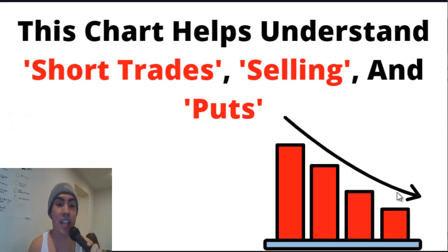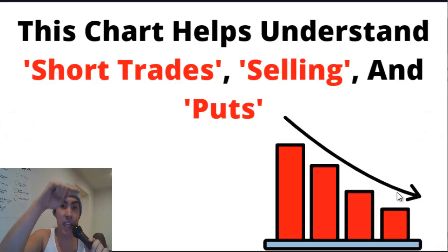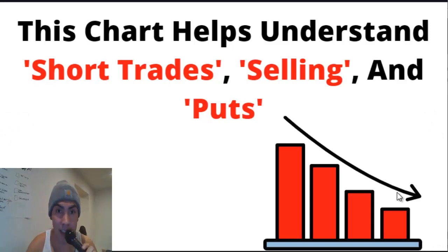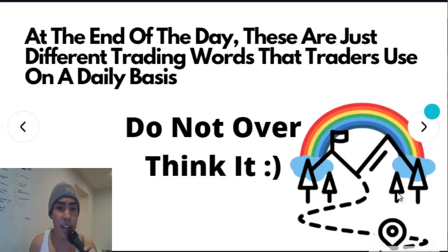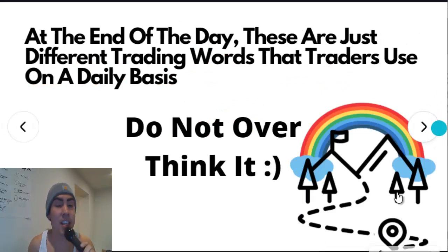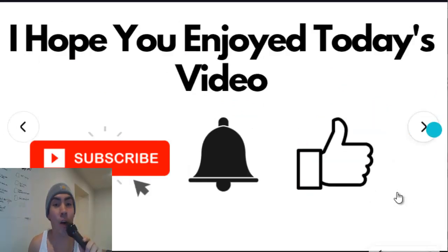This chart helps us understand short trades, selling, and puts. As you can see, the graph is going down and it's red, meaning the market is dropping. So that's what short trades are — selling and puts all mean and represent the same thing. At the end of the day, these are just different trading words that traders use on a daily basis. Do not overthink it.